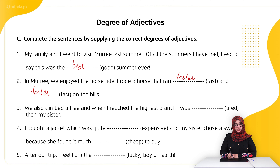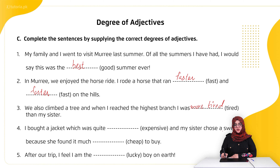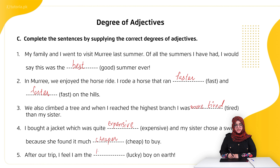Third sentence: 'We climbed a tree and when I reached the highest branch, I was more tired than my sister' — using comparative degree for 'tired'. Fourth: 'I bought a jacket which was quite expensive and my sister chose a sweater because she found it much cheaper to buy.' Fifth: 'After our trip I feel I am the luckiest boy on earth.'